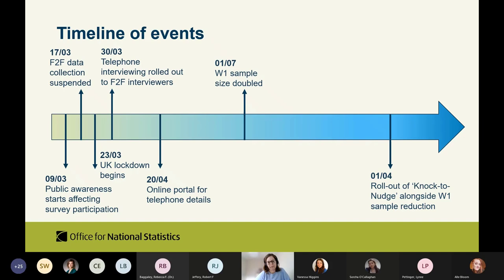For that reason, we doubled our wave one sample size to make up for the reduction. We then trialled a field strategy called Knock to Nudge late in the year on some other surveys first, before rolling it out in April 2021 on the LFS. Interviewers were able to go out knocking on doors — not to do face-to-face interviews, but to follow up on respondents where we didn't have phone contact details, to obtain phone numbers.